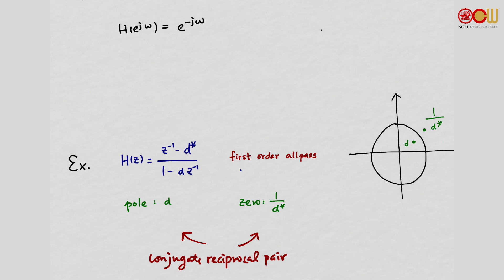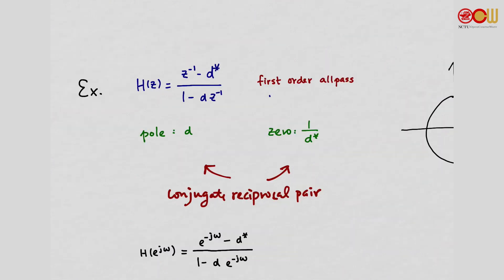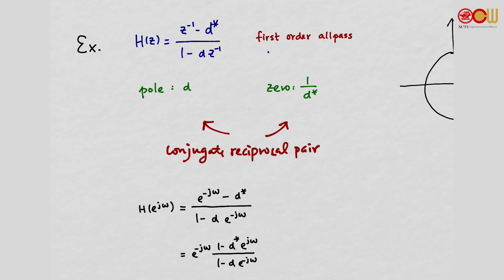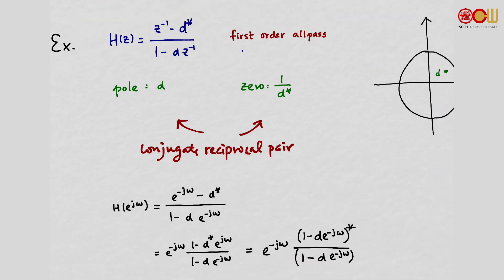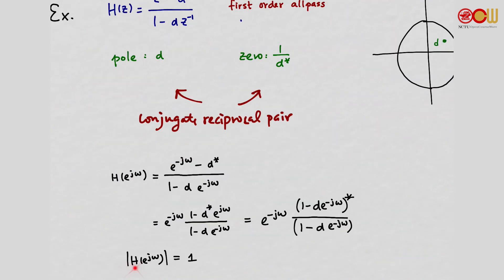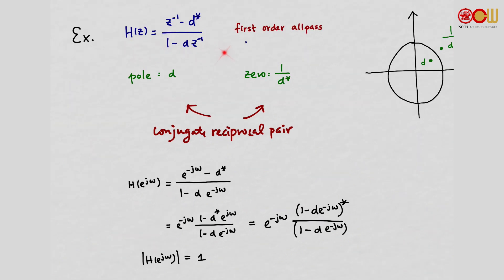Now let's see why this is an all-pass system. The frequency response H(e^{j omega}) is obtained by substituting z with e^{j omega}. We then pull out e^{-j omega}. The numerator and denominator are complex conjugates of each other — the numerator is the conjugate of the denominator — so the magnitude equals 1.